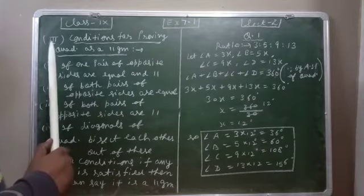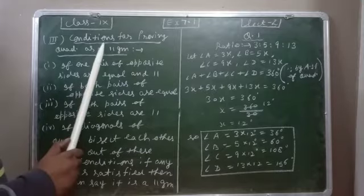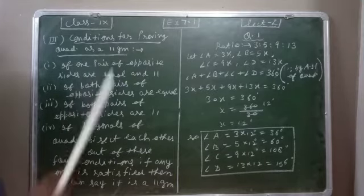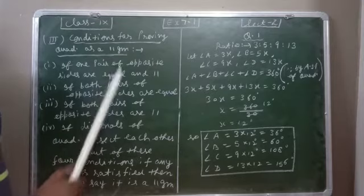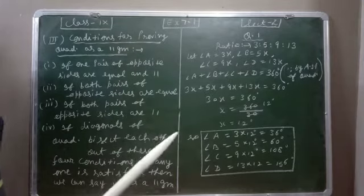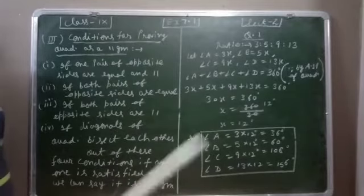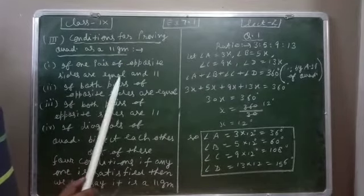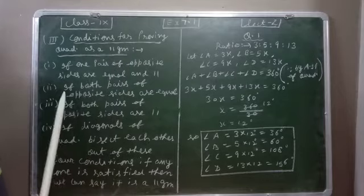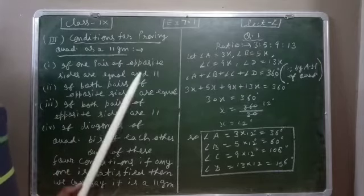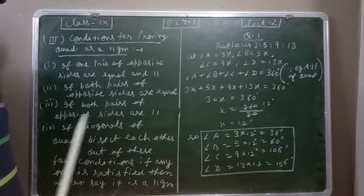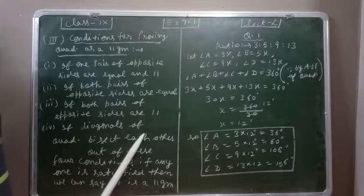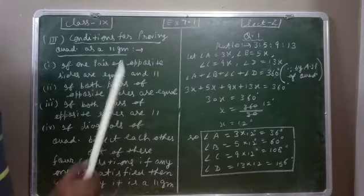The third basic point is conditions for proving a quadrilateral as a parallelogram. There are four conditions. First, if one pair of opposite sides are equal and parallel. Second, if both pairs of opposite sides are equal. Third, if both pairs of opposite sides are parallel. Fourth, if the diagonals of the quadrilateral bisect each other.